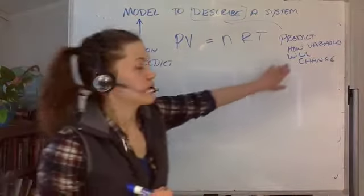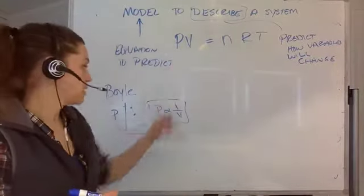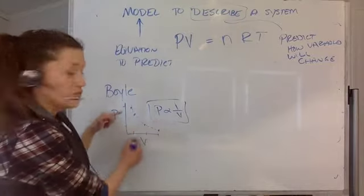Right? So if you know that the variables will change, let's say if we change P in some way, then how does volume change?